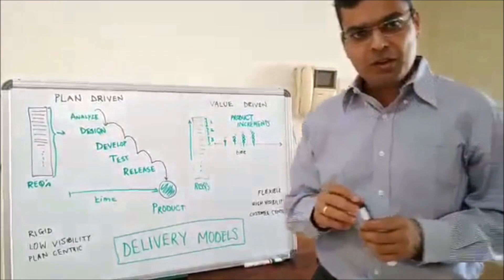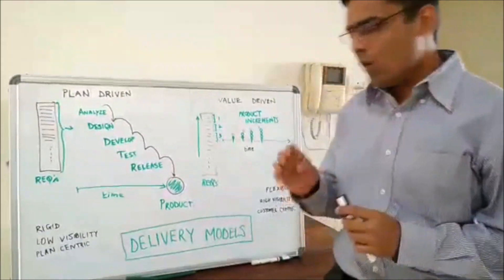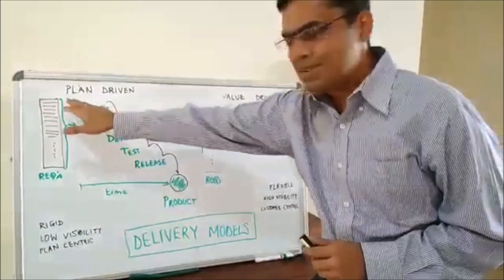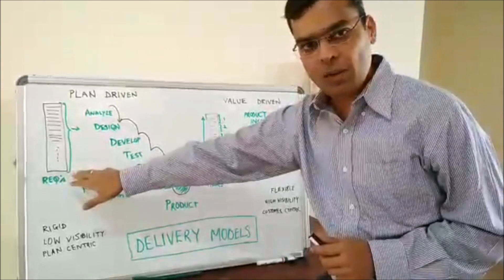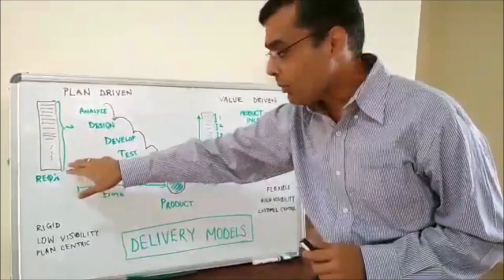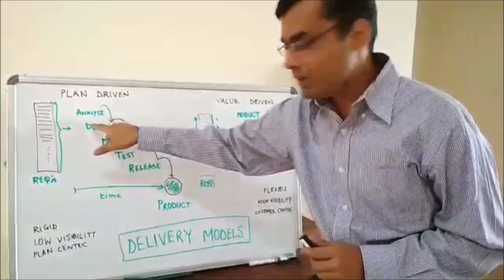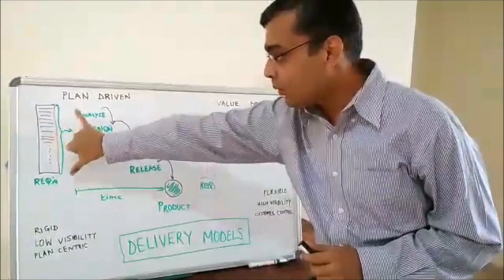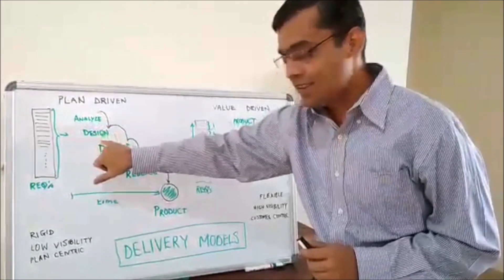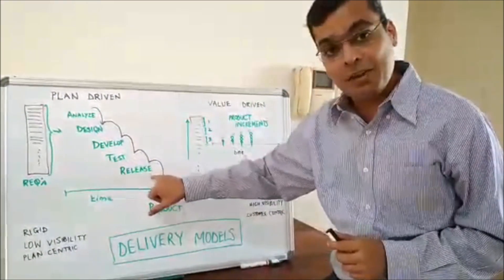So what we traditionally know as waterfall model is a plan-driven model. So what do I mean by that? When it comes to plan-driven model, the business team will provide a whole bunch of requirements. Till the requirements are not finalized, the business requirements, the software delivery team will not start with the analysis phase. Once they have the requirement, they will go through the analysis, then the design, then the development, test and finally the release phase.